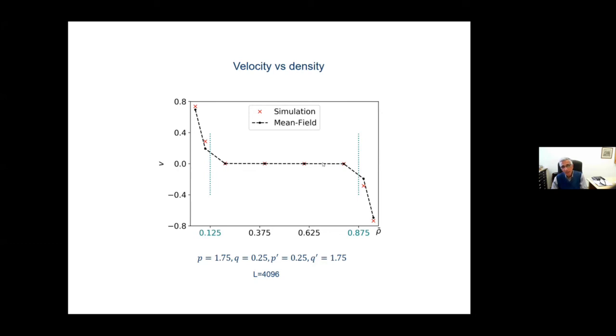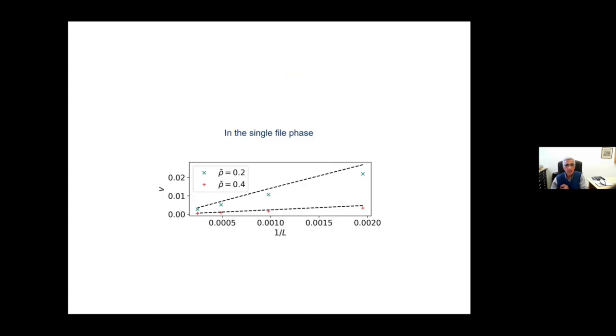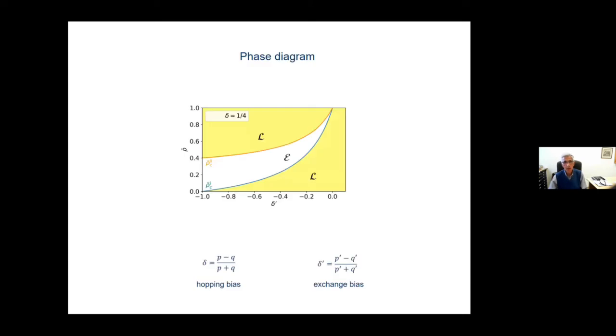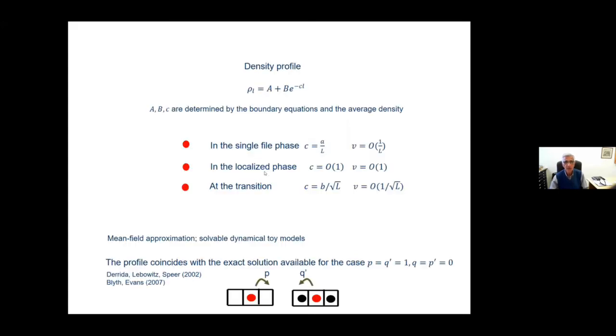Now, as you further increase the density, you get another transition, but this is just a peculiarity of the model, because we have particle-hole symmetry, and then you accumulate holes rather than particles. But that's a peculiarity of this particular model. Here is the velocity as a function of one over L, just to show that it goes like one over L in the single file phase, as we expect. This is the phase diagram. There is an extended phase and localized phases, and as you increase the density, you go through these two transitions I described.